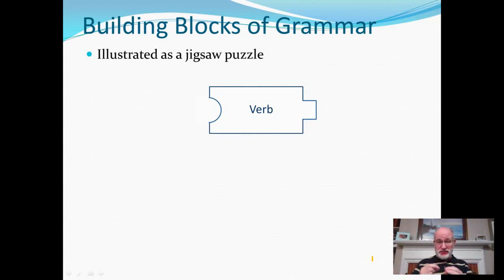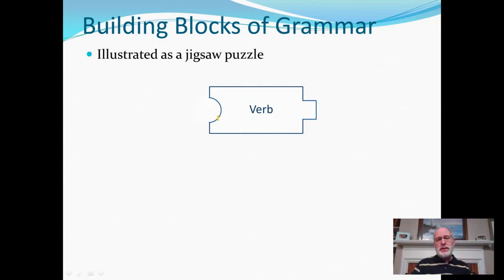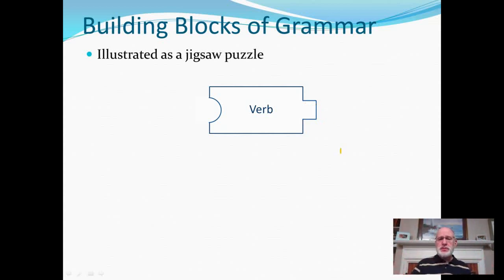Not literally like — because we're not talking about a literal physical fit. But remember those who or what questions. The who or what question to identify the subject is kind of like this circular part of the puzzle piece here — we're looking for something that fits the who or what question before the verb. When we're looking for the complement, we're looking for a who or what question after the verb. I've given a different shape here because the subject-verb connection is logically and grammatically a different kind of connection than the verb-complement connection. Since we've got two different kinds of connections, I'm giving two different shapes in the puzzle piece.